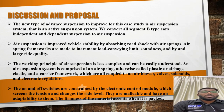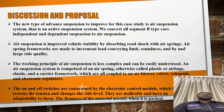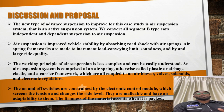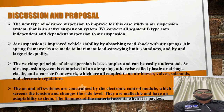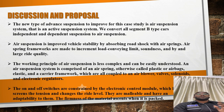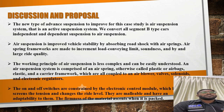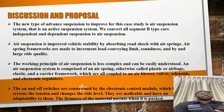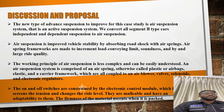My name is Mohani Krishnan. I want to explain the discussion and proposal of our suspension assignment. The type of advanced suspension we propose for this case study is the air suspension system. We convert all Task B type cars — both independent and dependent suspension — to an air suspension system. Air suspension improves vehicle stability by absorbing road shocks with air springs, providing incredible load handling capacity, stability, and ride quality. The working principle of an air suspension system is less complex and can be easily understood. It comprises an air spring, also known as a plastic or airbag bellows, and a carrier, coupled with an air blower, valve solenoid, and electronic regulator.